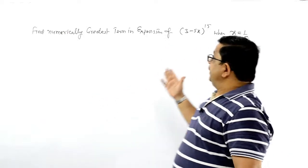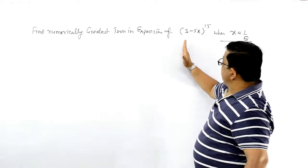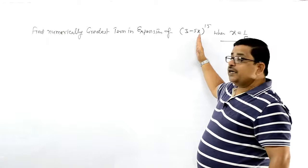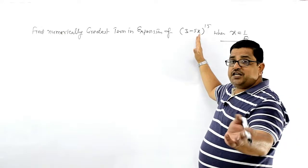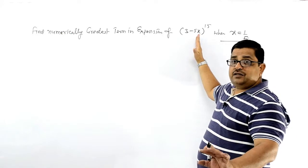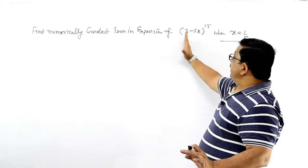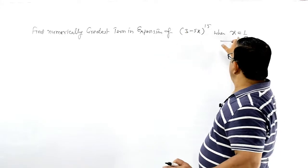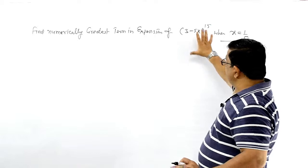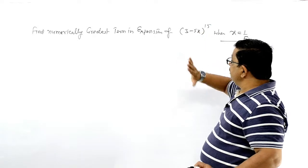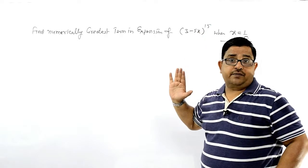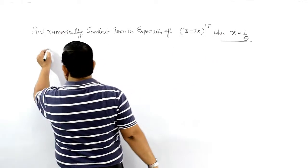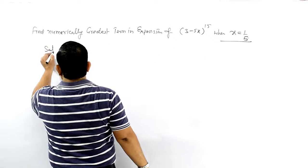इसमें x वाली जगह हमारी यह वाली है और a वाली जगह यह है, तो उसको interchange नहीं करना है। Directly x वाली जगह जो लिखा वो लिखेंगे, a वाली जगह उसकी value decide करके लिखेंगे और दोनों को solve करेंगे, नहीं तो value change हो जाएगी।